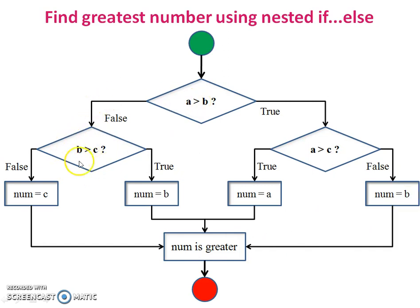When a greater than b, false, so check b greater than c. True, then b will be greater. So the particular number is greater after checking all of the conditions. The flowchart will be stopped here.